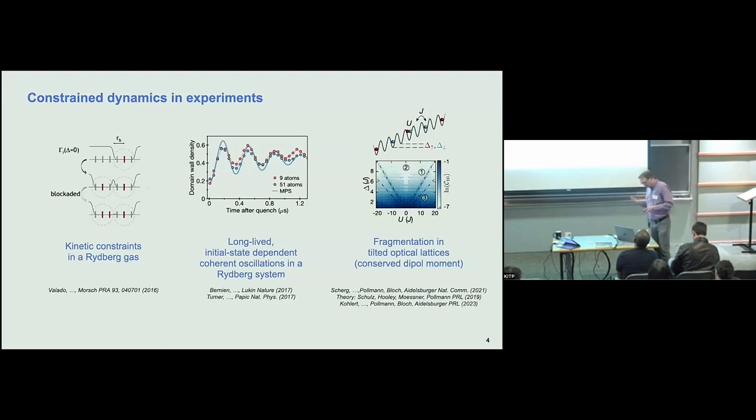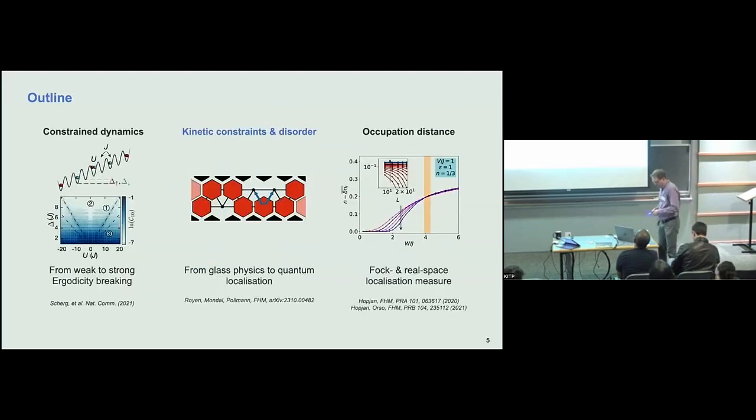So what I'm going to talk about in this talk is after the short introduction on constraint dynamics, I'll actually focus on models that have kinetic constraints. So these examples of kinetic constraints in the beginning, the sort of models that we're interested in are actually motivated from classical physics. So there's an additional interest here in glass physics. It's essentially been cooked up to have a mechanism to get glass physics as I increase the density.